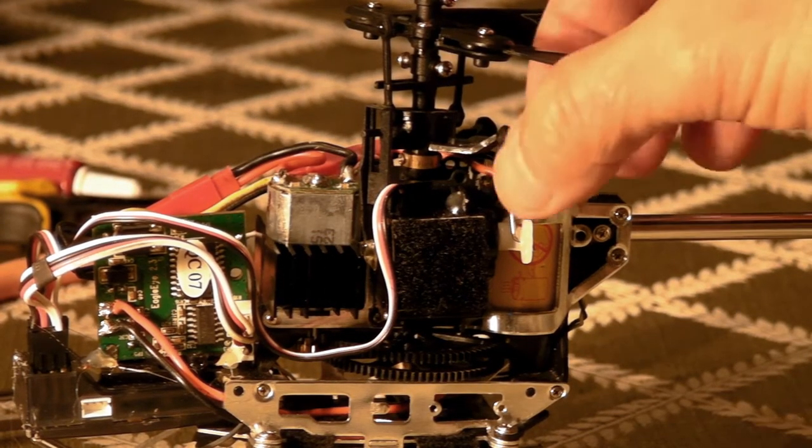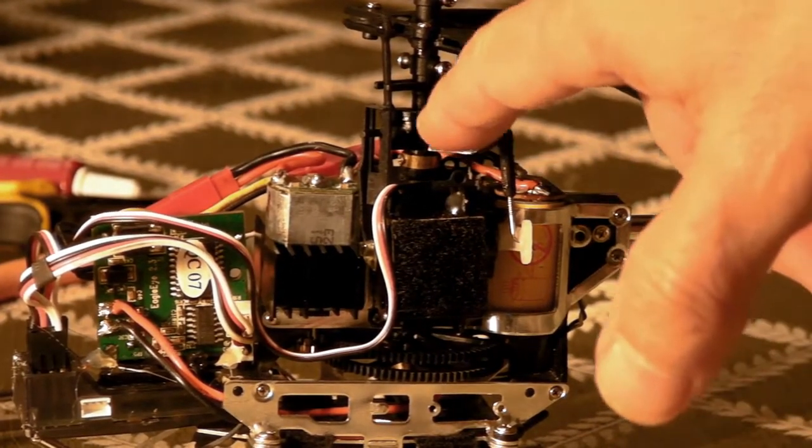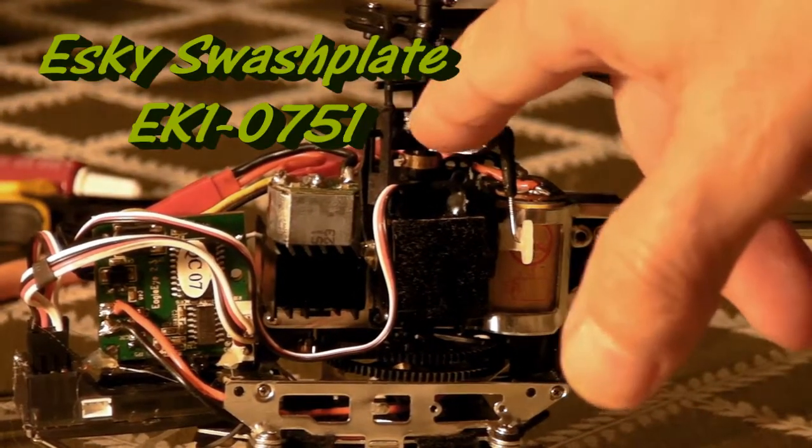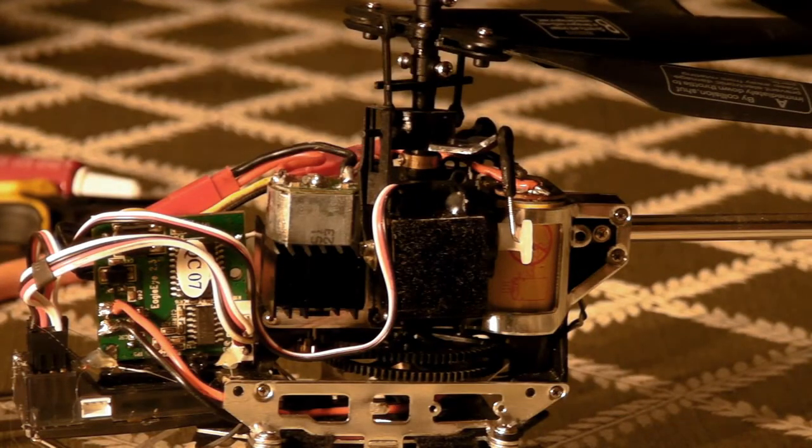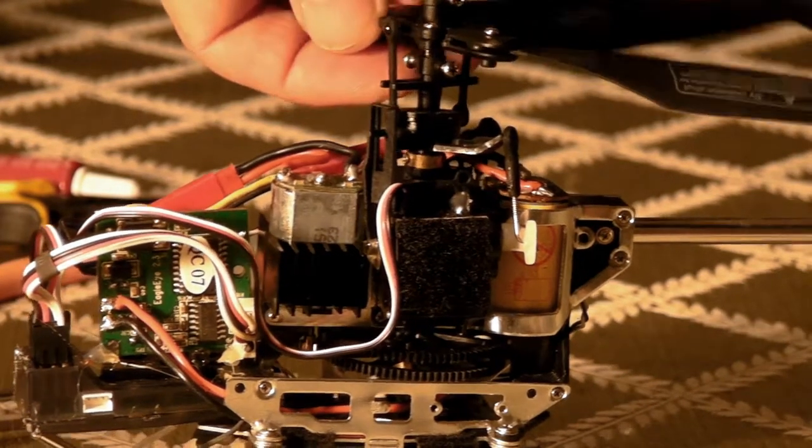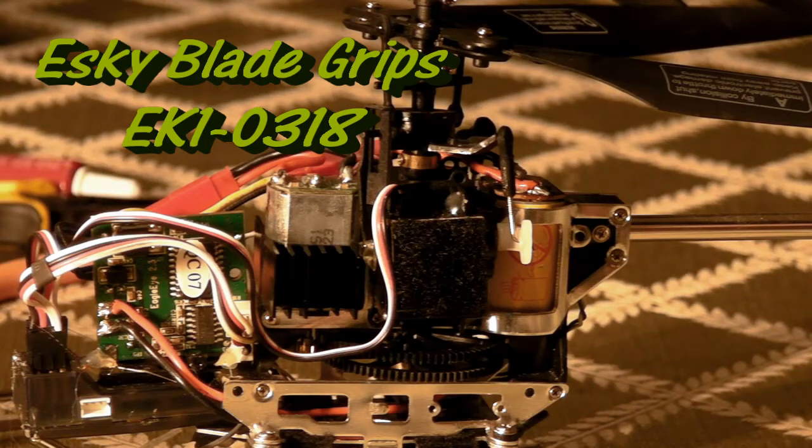So that gives you really strong servo support for the eSky swash plate, which fits perfectly over that shaft, and the blade holder. And so there you go. You've got a four channel.